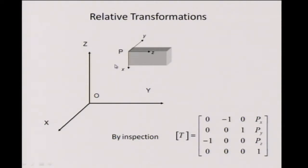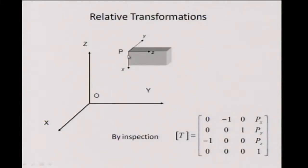We can pretty much do this by inspection, simply by writing down the direction cosines of the various vectors. You take the x vector here — it is directed opposite to the z direction — so we have 0, 0, minus 1. We take the y vector that is directed opposite to the x vector, so it is minus 1, 0, 0. Then 0, 1, 0, and the position p is px, py, pz and 1. Straightforward — you can do this by inspection if it is visually doable, which is typical of exam problems but atypical of real life problems.